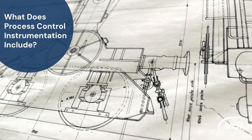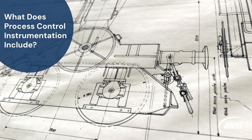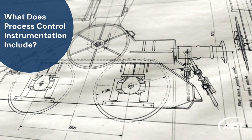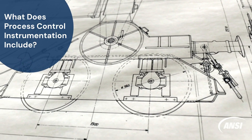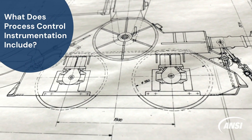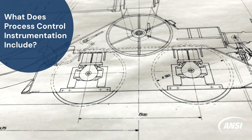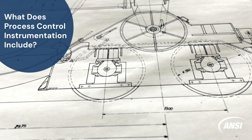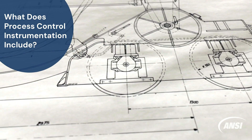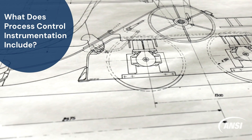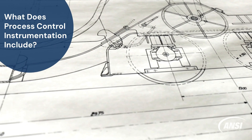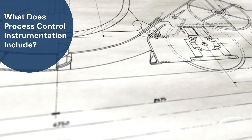Process control instrumentation includes control valves, actuators, transmitters and other devices that automatically adjust variables like flow rates, chemical concentrations, mixing speeds and more.